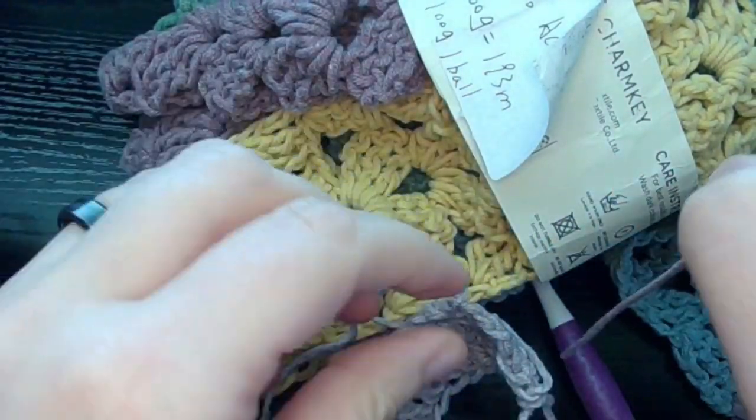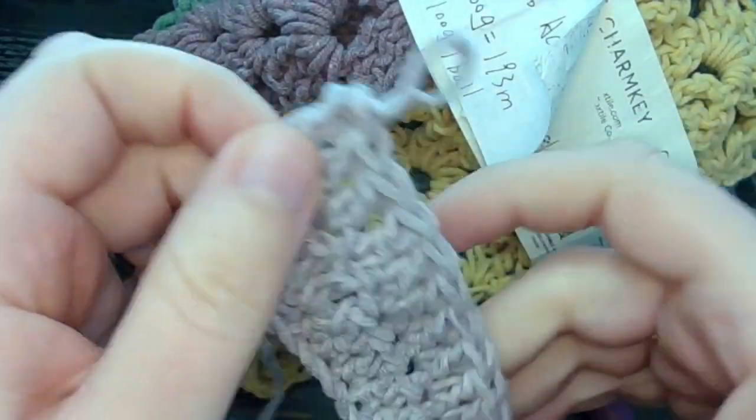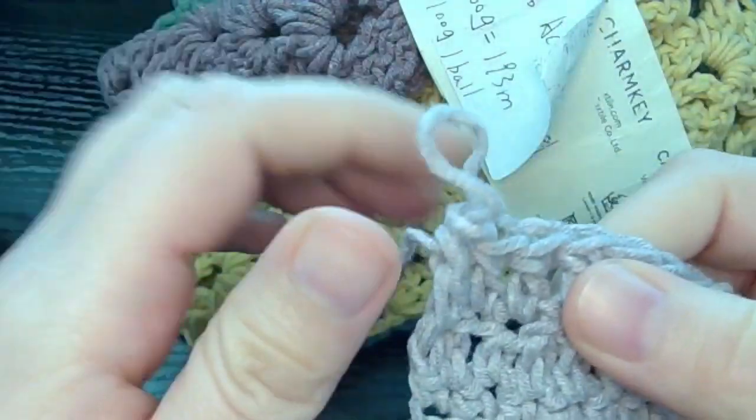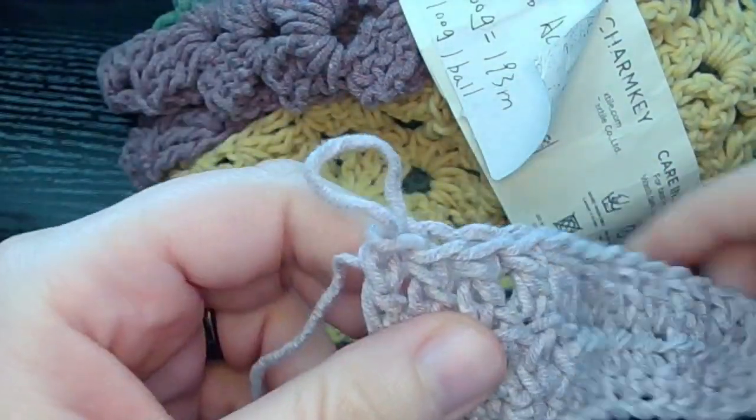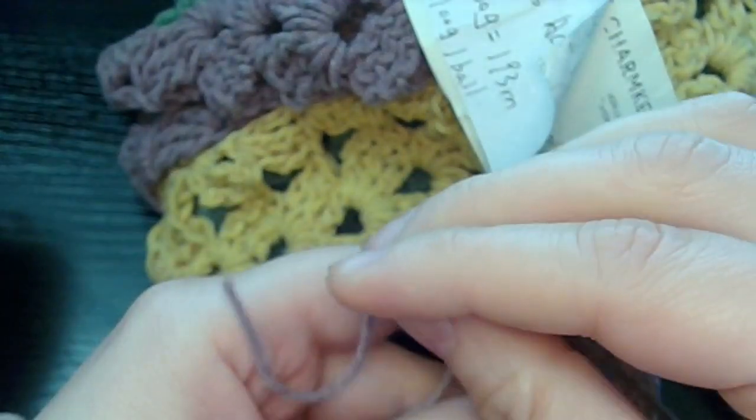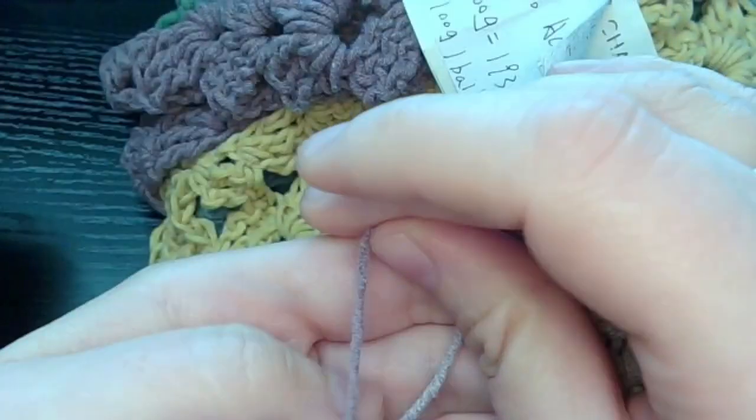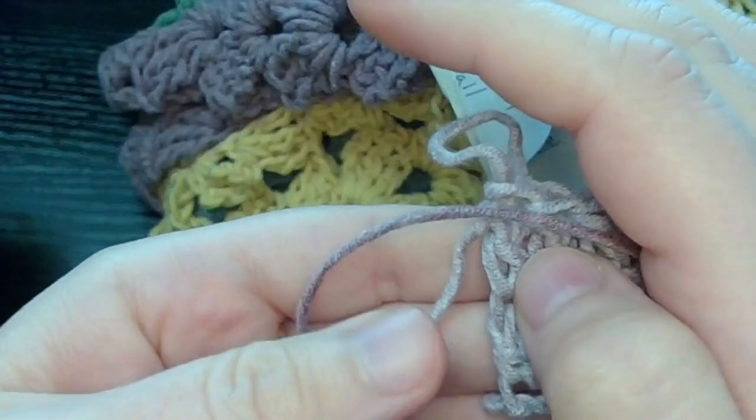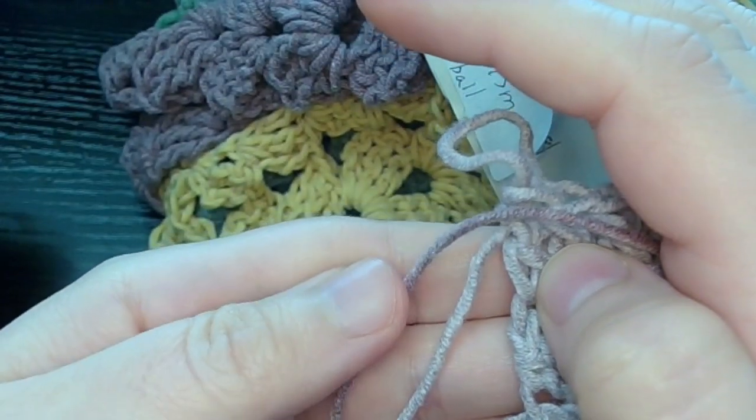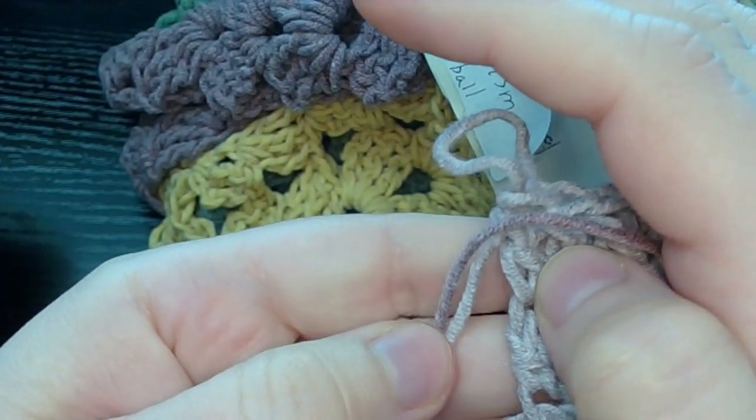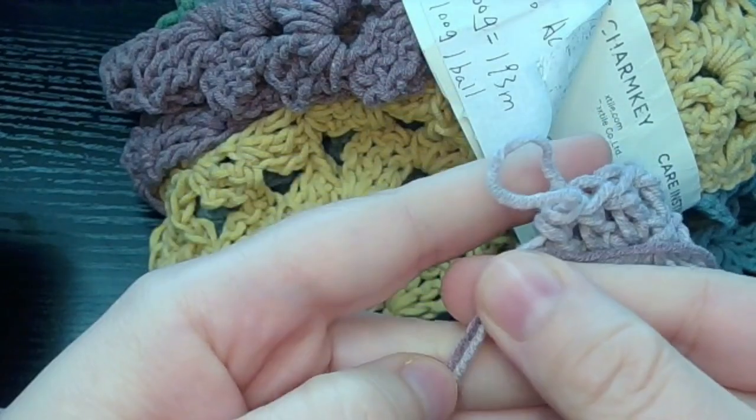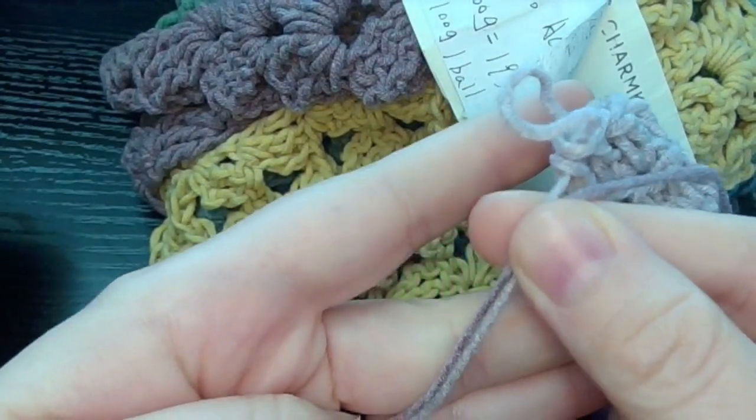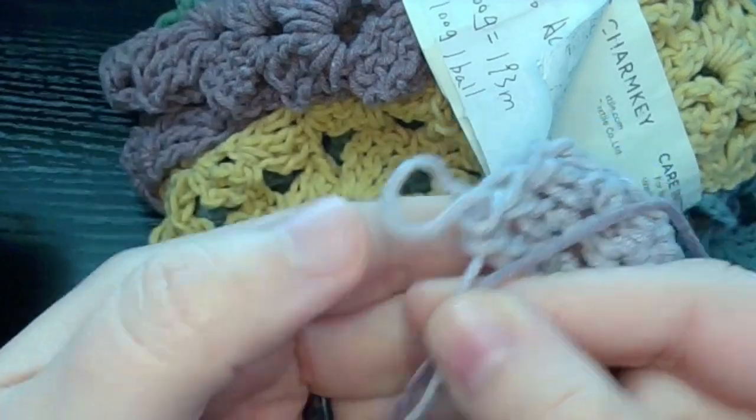I was saying that the darker purples from the Charm Key yarn, when it was compared to that cake, it was a little thinner. Because when I first reviewed that Charm Key yarn before I even worked it up, I calculated it as like a three weight.